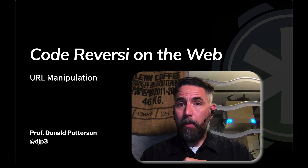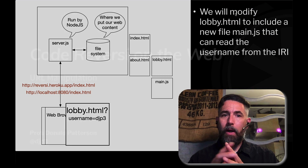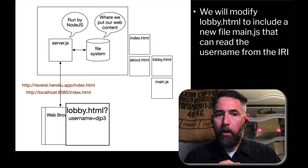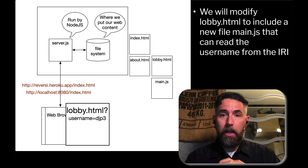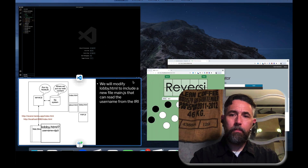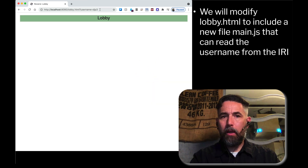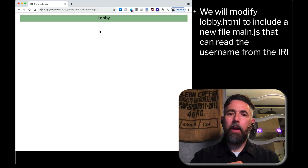In this video, we're going to pick up on our URL parameter manipulation and adjust our code so that lobby.html, requested with a URL or IRI parameter, can get that data and do something with it. Right now, if we enter our username and go to our lobby adding username=djp3, lobby doesn't do anything with it — and that's what we want to modify.